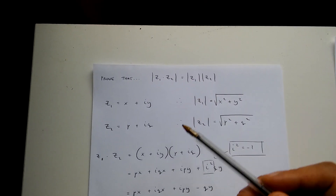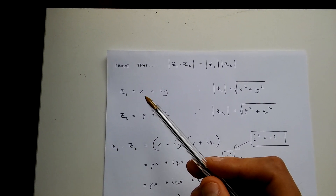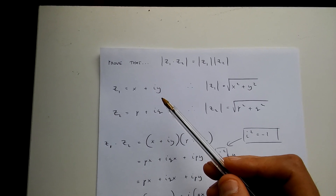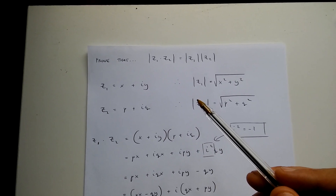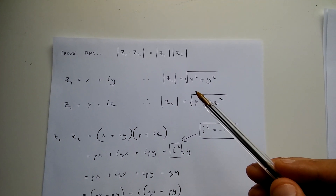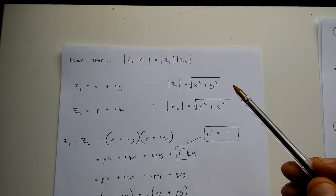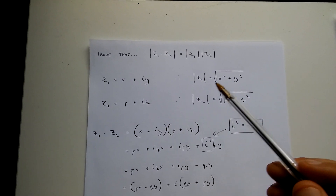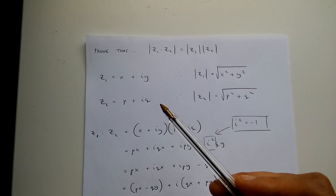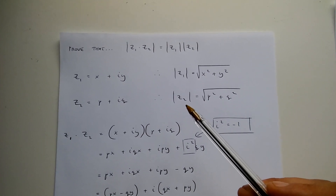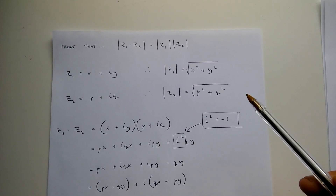Now in order to prove this, I need to write down that z1 is equal to x plus iy, i being an imaginary number. This means that the modulus of z1 is the square root of x squared plus y squared. And if z2 is equal to p plus iq, then the modulus of z2 is equal to the square root of p squared plus q squared.